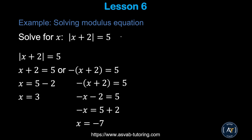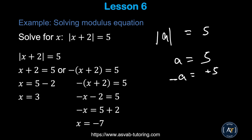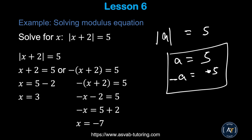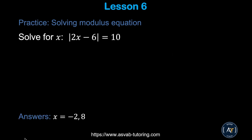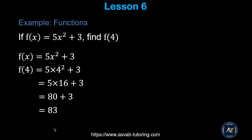Now let's solve absolute value equations. The absolute value of a equals 5 means a = 5 or a = −5, since absolute value gives both positive and negative solutions. For |x + 2| = 5: solve both cases to get x = 3 and x = −7. Try the practice problem and make sure you get the correct answer.